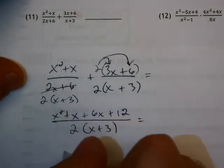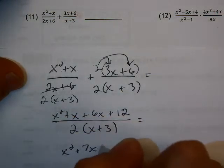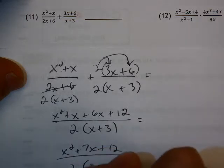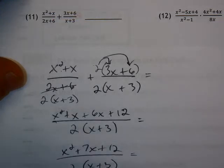When I combine terms, I'm going to get x squared plus 7x plus 12. I'm going to leave this as 2 times the quantity of x plus 3. And I think this might factor, so I'm going to try that. I'm going to have the denominator still 2 times the quantity of x plus 3.